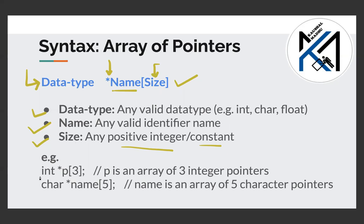In this example, we have a pointer. The star denotes a pointer. An array of pointers contains pointers to character type.